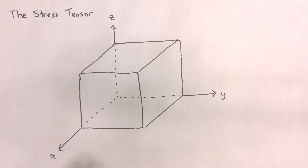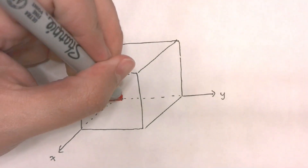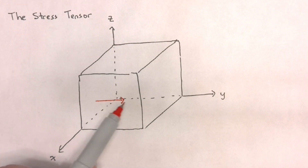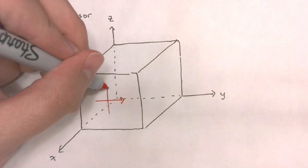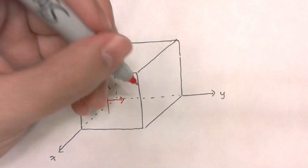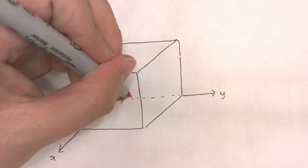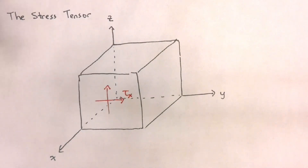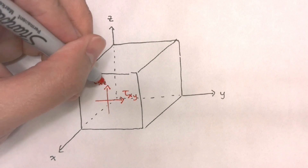Let's look at the shear components first. On the x-face, we will have a shear component that can act in the y-direction, and a shear component that can act in the z-direction. We will call these shear components Greek letter tau, x-face, y-direction, and Greek letter tau, x-face, z-direction.